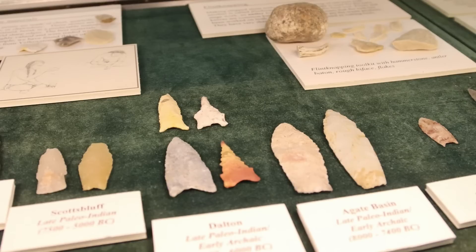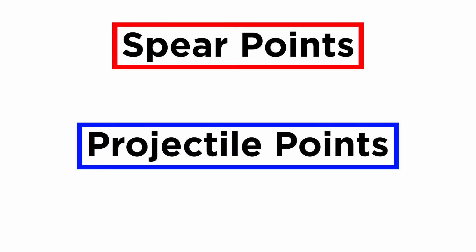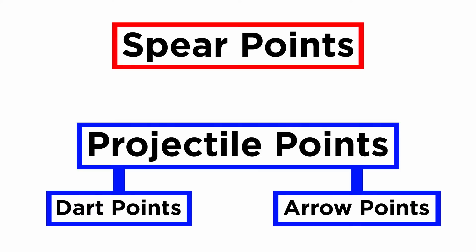Now that we know how to identify flakes and points, let's learn some basic analyses of them. As with all artifacts, knowing where in the world the lithic artifact was found is the single most important datum. Points can be broken down into two broad categories: spear points and projectile points. Projectile points need to be attached to a shaft and must be aerodynamic enough to fly through the air. Projectile points can be further broken down into two categories: dart points and arrow points.